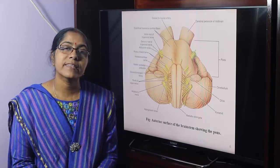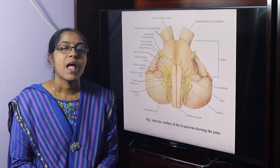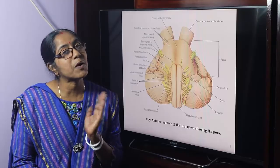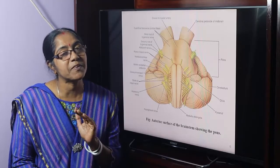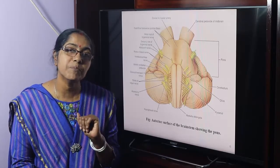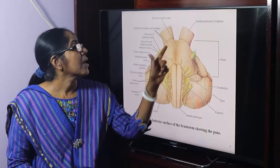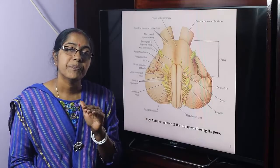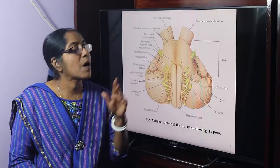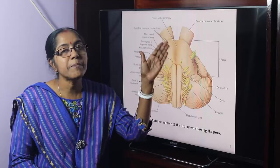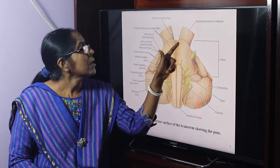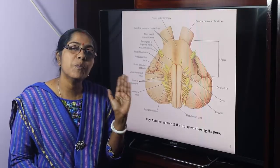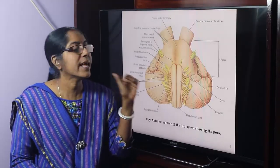Now we are concerned with the pons. The pons is part of the brainstem. We know the brainstem consists of midbrain, pons, and medulla. This is the pons; it is about 2.5 cm in length.